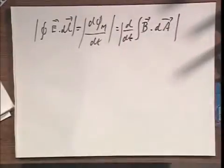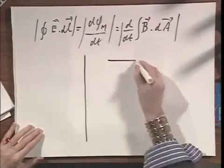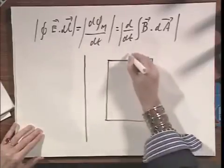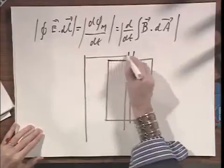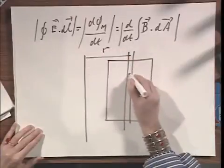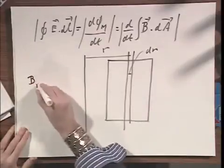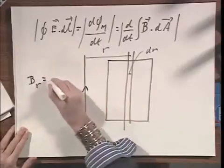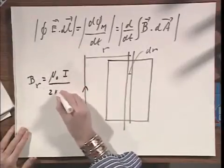And now what I have to do, to calculate this properly, I have to take a slice out of here at distance r, and the width of the slice is dr. And the magnetic field at that position r, away from this wire, with current i, is something that you by now know by heart, is mu zero i divided by two pi r.